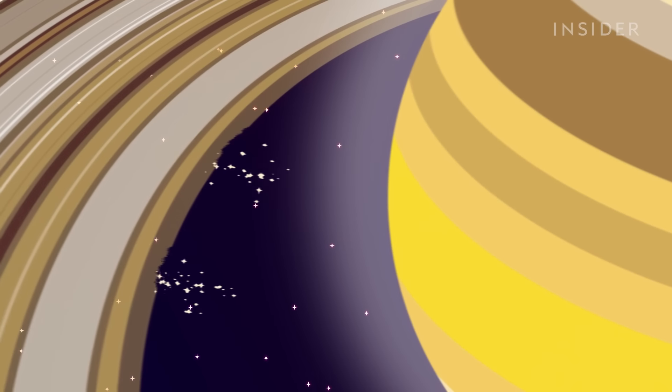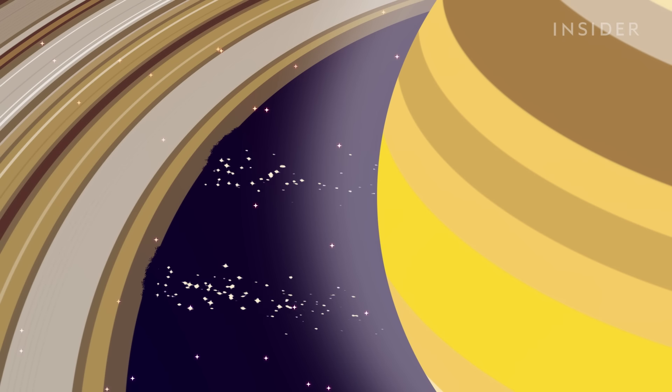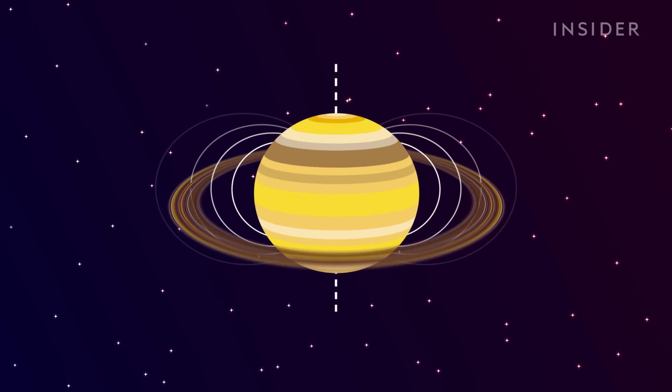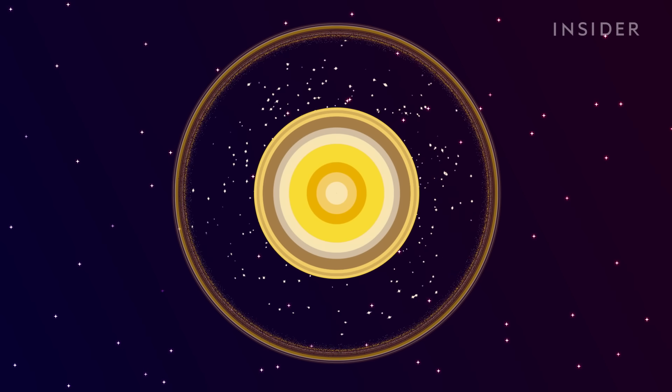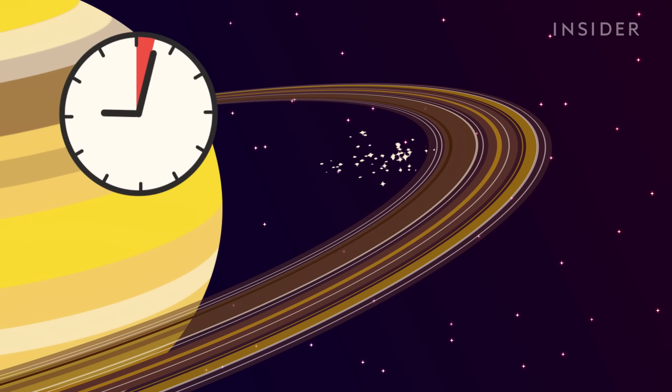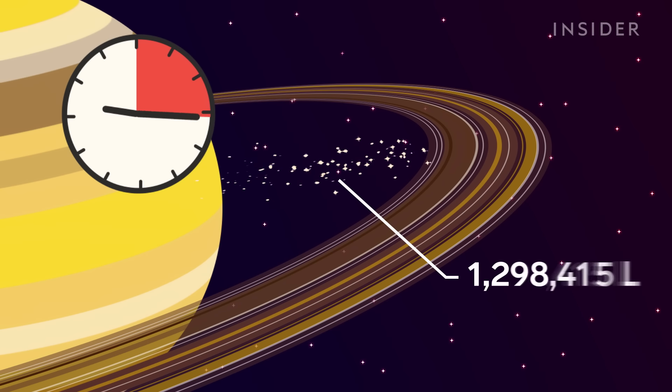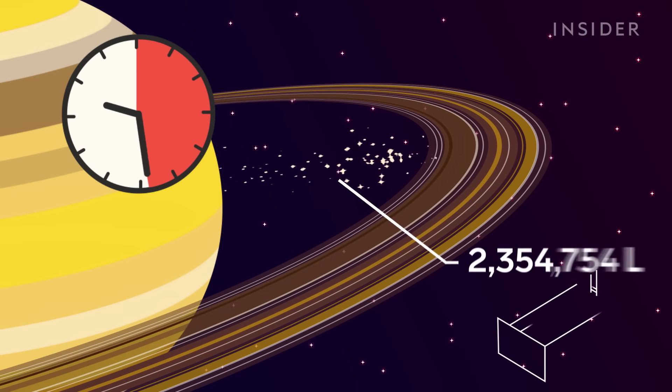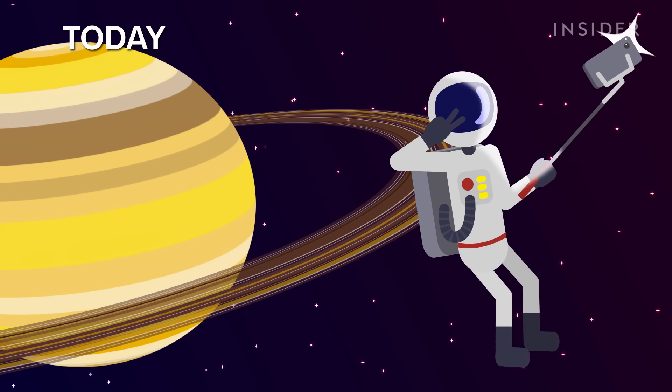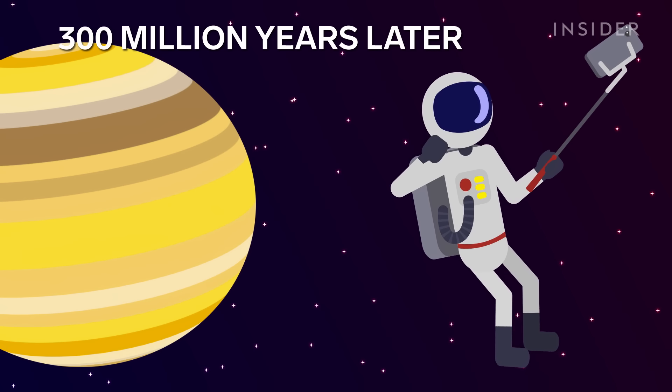Now, you might notice that streams of tiny ice particles are also flying off the rings, heading towards Saturn. That's ring rain. It turns out, Saturn's magnetic fields are slowly but surely draining away the rings. So we're lucky to visit the rings now. Because every 30 minutes, they lose enough water to fill an Olympic-sized swimming pool. And if we arrived 300 million years in the future, we'd miss them entirely.